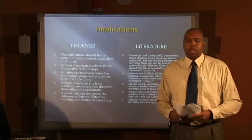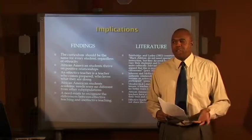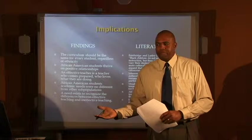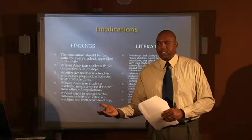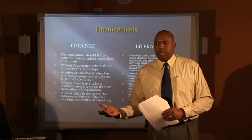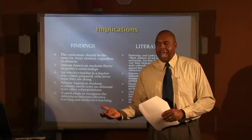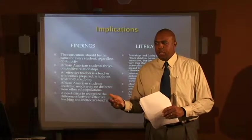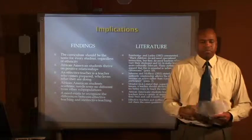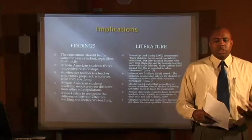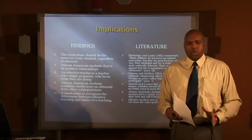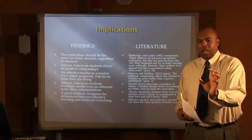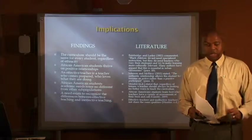Another implication in the findings was that African American students thrive on positive relationships, and the literature supported that finding. Johnston and McElroy stated the authentic relationship allows students to become active participants rather than passive observers. Once you build that relationship, the student-teacher relationship, you can go forward and really get students to where they need to be in their learning. And an effective teacher is one who comes prepared and loves what they are doing — that was part of the findings.